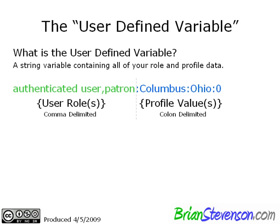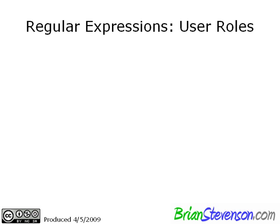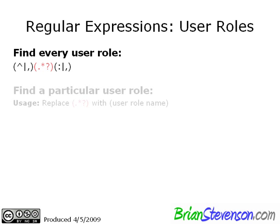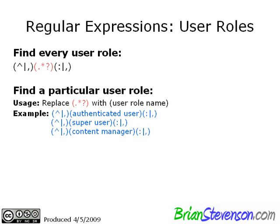Let's cover how we might use regular expressions. For a user role, you follow a format where the left bracket contains a caret, pipe, and comma — meaning find the beginning of a string or a comma. On the right side, a colon, pipe, and comma means we need to find either a colon or a comma at the end of the match. What's in the middle — shown in red — is what you replace with the user role name, such as 'authenticated user', 'super user', or 'content manager'. This finds that specific user role within your user variable.